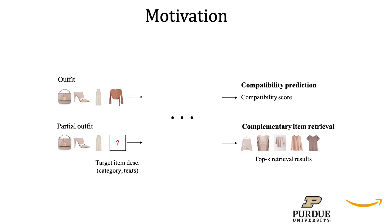The motivation behind our work stems from two main tasks a fashion outfit recommendation system must be able to address. One is fashion compatibility prediction, where the goal is to determine whether a set of fashion items in an outfit go well together in terms of a compatibility score. The other is large-scale complementary item retrieval, where the goal is to complete a partial outfit based on a target item description — for example, a top — by finding a compatible item from a large database.